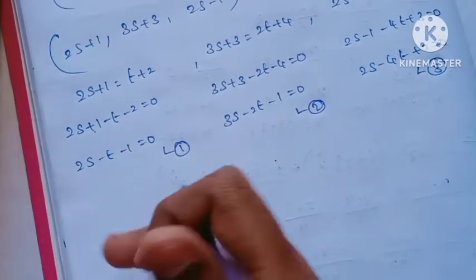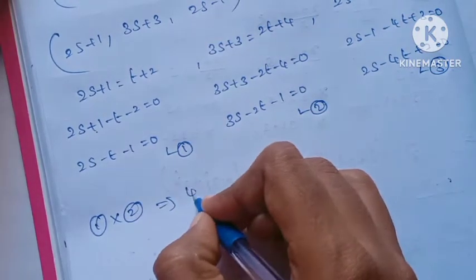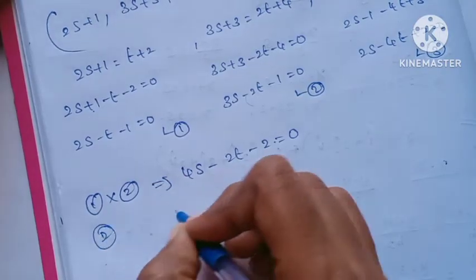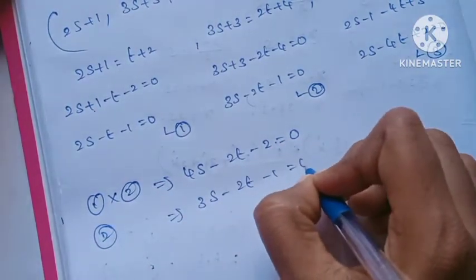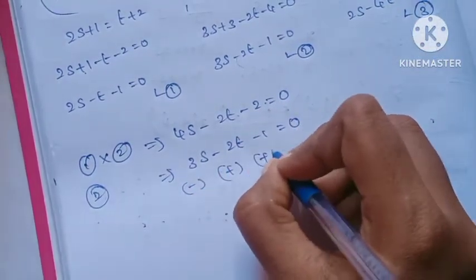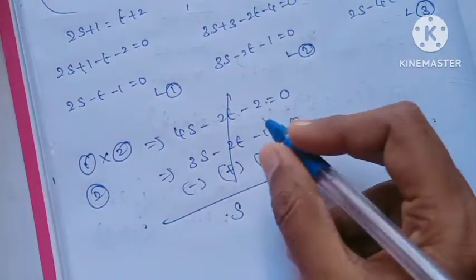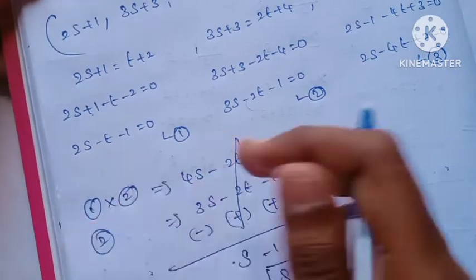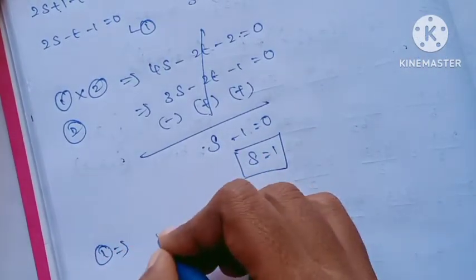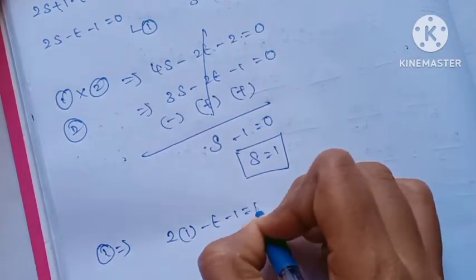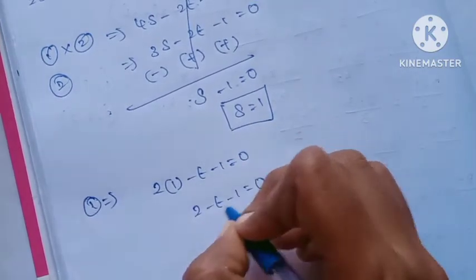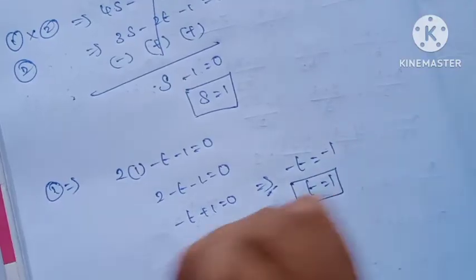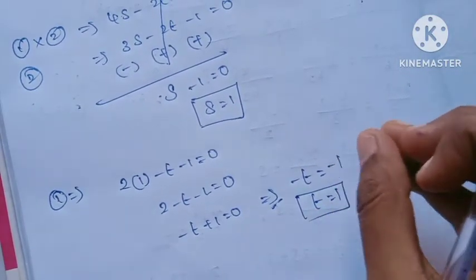Solving equations 1 and 2: subtracting gives s = 1. Substituting s = 1 into equation 1: 2(1) minus t minus 1 = 0, so 2 minus t minus 1 = 0, giving minus t + 1 = 0, therefore t = 1. So s = 1 and t = 1.